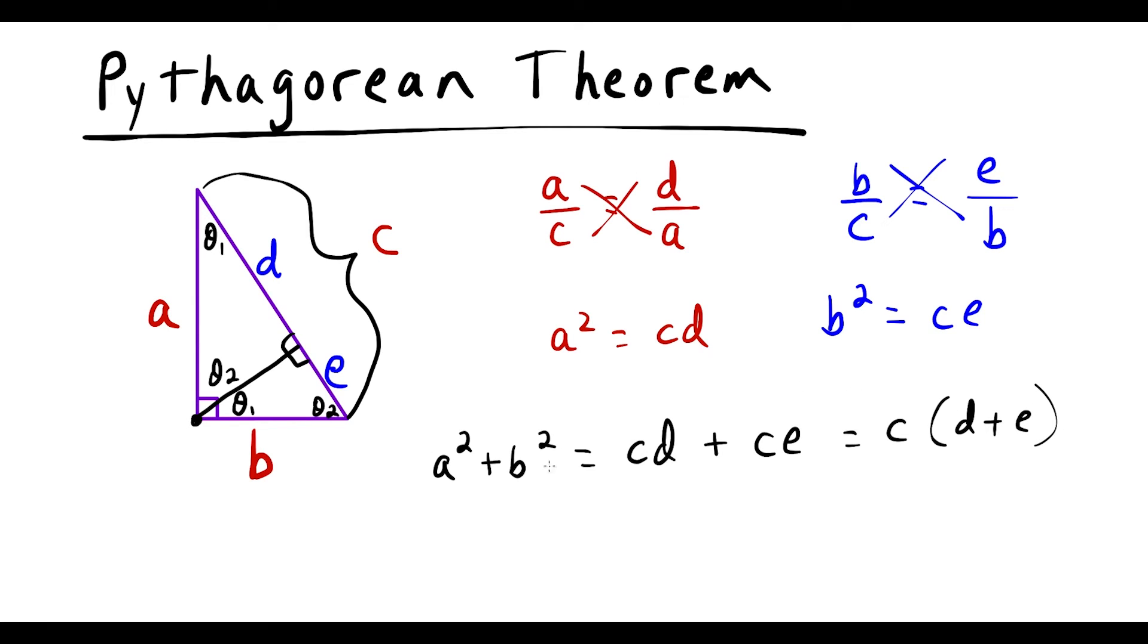And now it may not seem like we accomplished much here but we have a squared plus b squared equals and now we have c times, pay attention over here, d plus e. If we add those two segments together d plus e is equal to the entire length c. So we have c times c which would equal c squared.